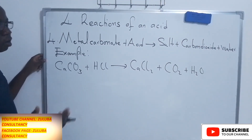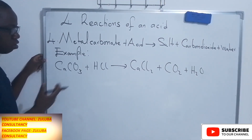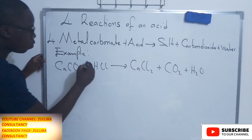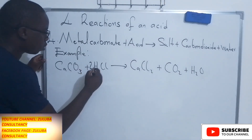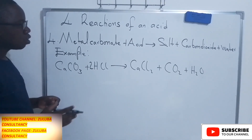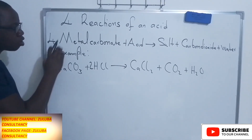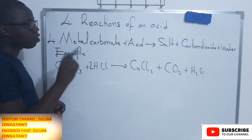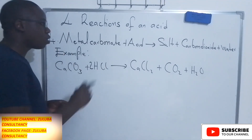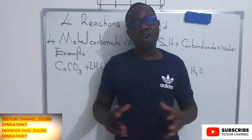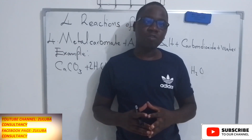The only thing we need to look at is whether this equation is balanced. When you put a 2 here, the equation is balanced. So when a metal carbonate reacts with an acid, you'll always have a salt, carbon dioxide, and water.